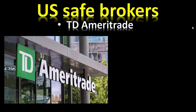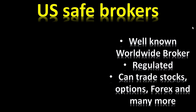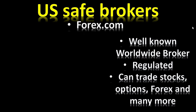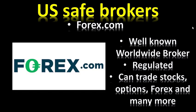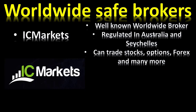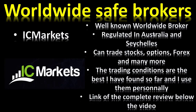Safe brokers: the first is TD Ameritrade — a well-known American broker, regulated; you can trade stocks, options, Forex and many more. The second is OANDA with the same criteria. The third is Forex.com. All of them are regulated and safe brokers worldwide. If you are outside of the US, there is a worldwide broker I prefer to work with: IC Markets. It is a well-known worldwide broker regulated in Australia and Seychelles; you can trade stocks, options, Forex and many more. The trading conditions are the best I have found so far and I use them personally.